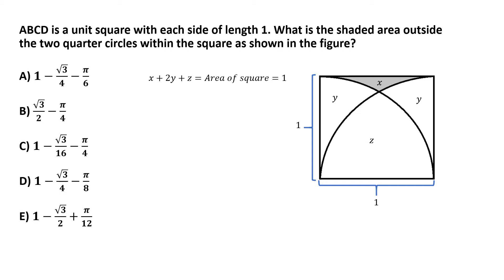Now consider the summation of the areas y and z. Together they make up one of those quarter circles, which is pretty obvious from the labeling. So y plus z gives us the area of the quarter circle. These quarter circles have radius equal to the side of the square, which is one. So the area of the quarter circle is π times one squared divided by four, giving us π/4. Therefore y plus z equals π/4.